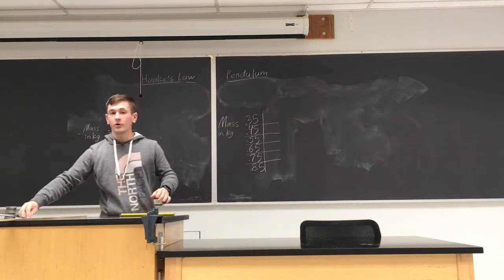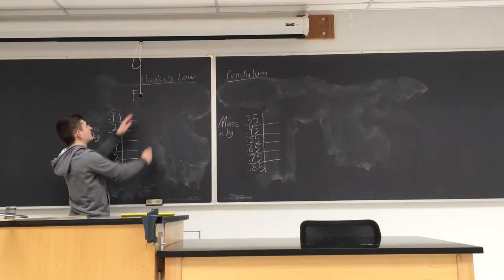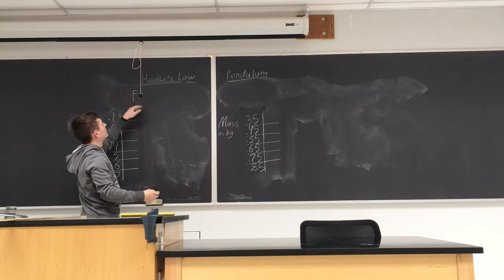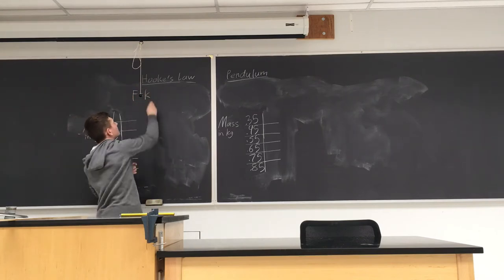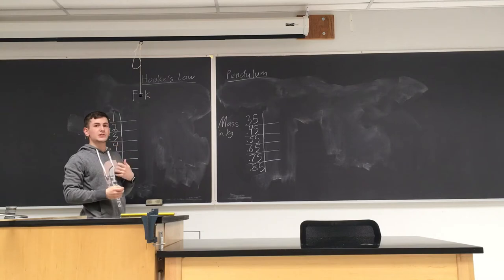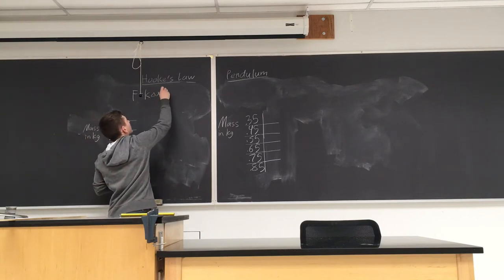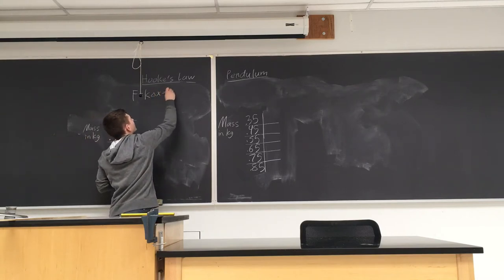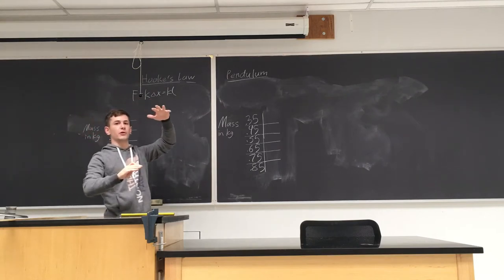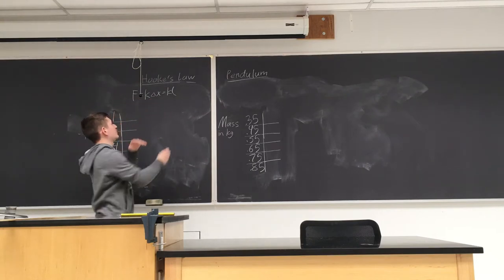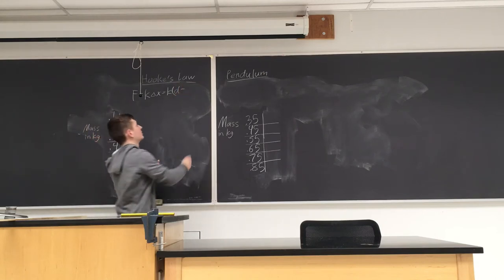We know that Hooke's law says that the force applied F on a spring is equal to the spring constant K times the displacement from equilibrium, delta X. For our cases we can rewrite delta X as the total stretched length of the spring when we stretch it, D, minus the equilibrium length, L.